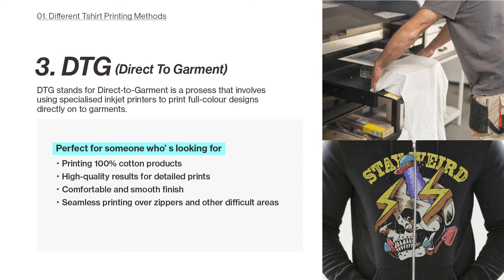DTG stands for direct to garment — a process that uses specialised inkjet printers to print full colour designs directly onto garments, working much like loading a sheet of paper into a colour inkjet printer at home. You get to see the design on the T-shirt right away. Unlike other textile printing methods, DTG uses water-based ink rather than oil-based ink. DTG works best on 100% cotton white fabric with no pretreatment required, though you can still print on cotton/polyester blends or 100% polyester — but DTG on darker polyester fabrics can be tricky due to how the ink interacts with the fabric.